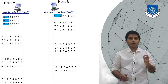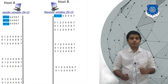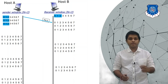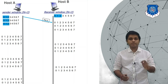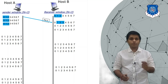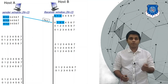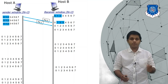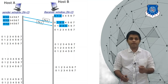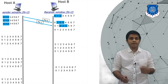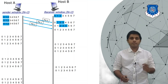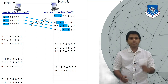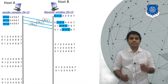A will send packet 0. B will receive packet 0, and as it receives packet 0, the window at the receiver side will slide. For the next time it is expecting 3 packets: 1, 2, and 3. Then A will send packet 1, B will receive packet 1, so the window will slide. A will send packet 2 and B will receive packet 2, and it will slide to 3, 4, and 5.